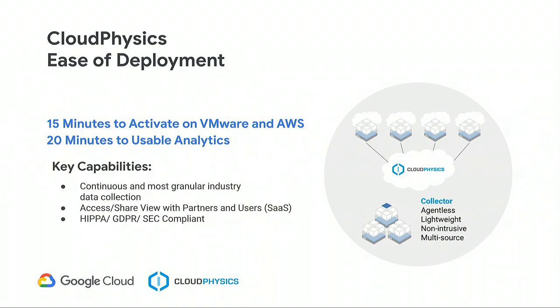Architecturally, Cloud Physics is a single virtual appliance — you deploy it in your data center or connect to the cloud provider. It collects performance and configuration metadata from your resources and brings it to the cloud for analysis. It's a SaaS-based platform. For virtual infrastructure, we collect data every 20 seconds. That 20-second granularity lets us do histograms and detailed analysis on configuration data. We have a shared portal view, so partners and customers can work together and collaborate on that data.